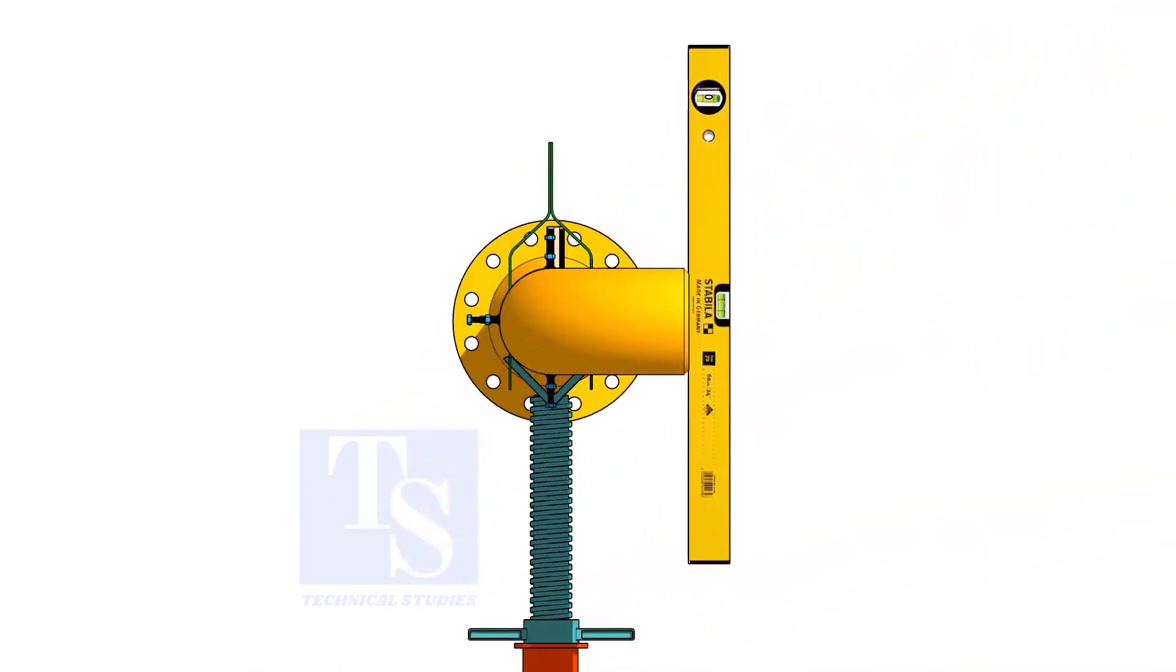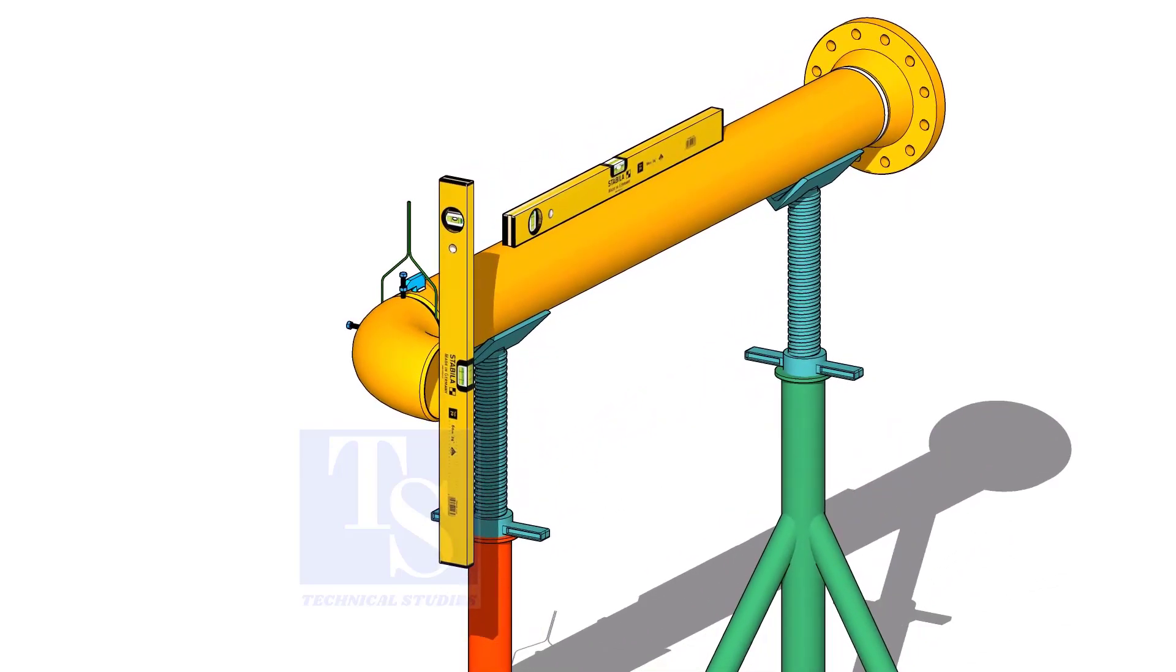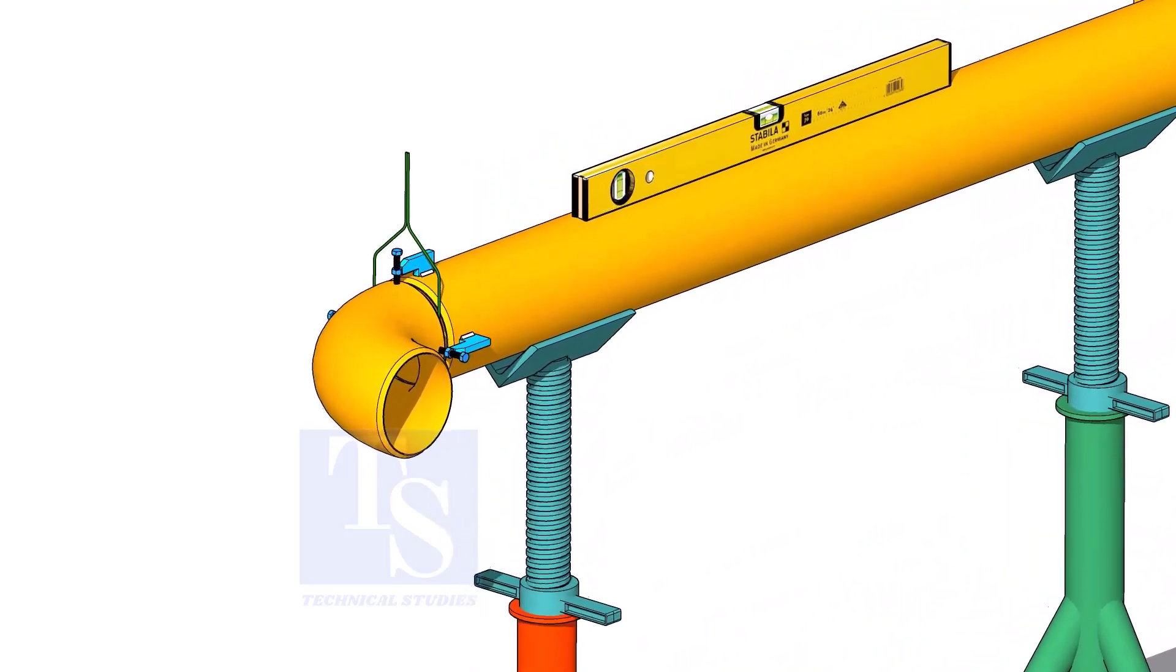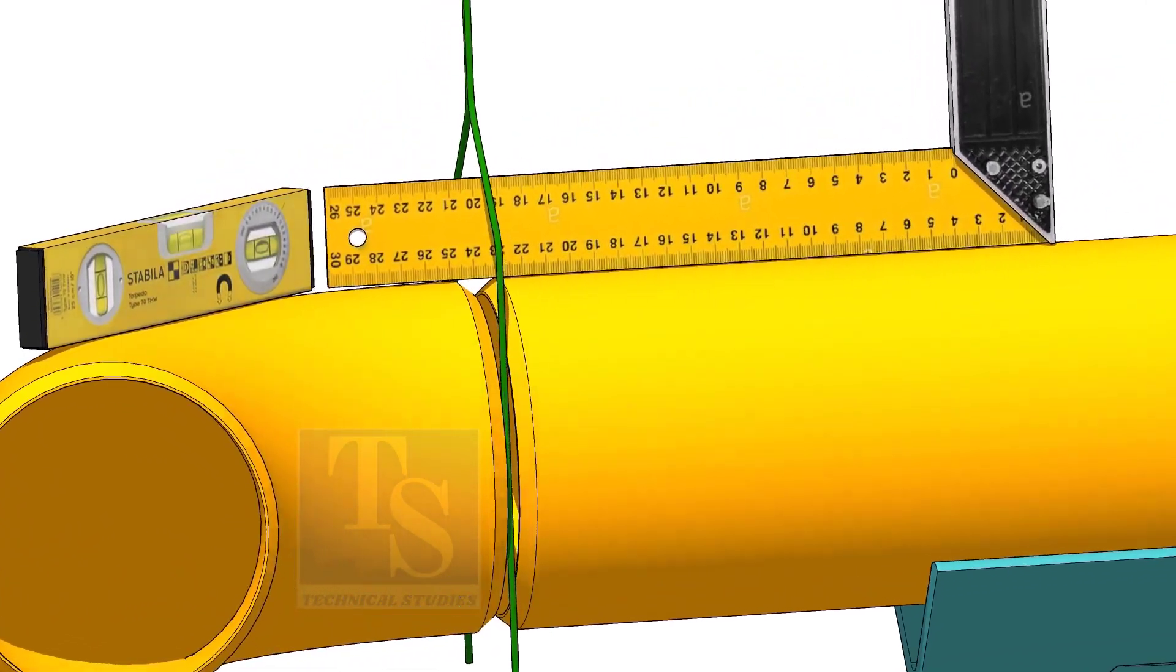Check the level of the elbow face. You can use either a level bottle or a plumb. Correct the overlap.